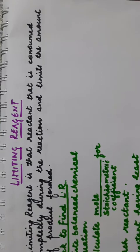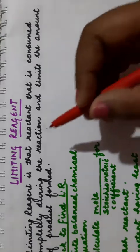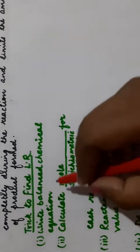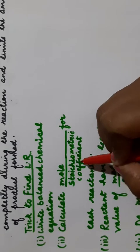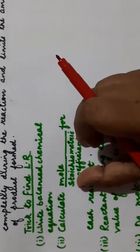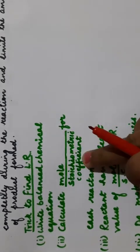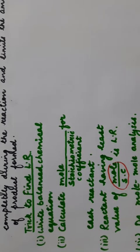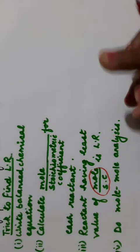Now we will take up a chemical reaction example to understand the trick to find out the limiting reagent. The trick is: first write the balanced chemical equation, then calculate mole divided by stoichiometric coefficient for each reactant. The stoichiometric coefficient comes from the balanced equation, and the moles are given. The reactant with the least value of this ratio will be the limiting reagent. Then you can do mole-mole analysis to calculate the amount of product formed.